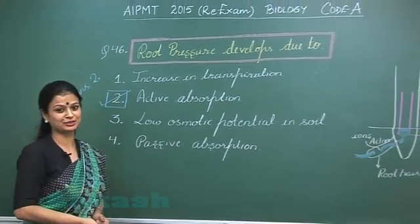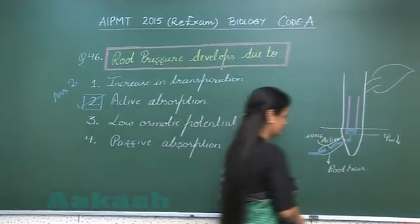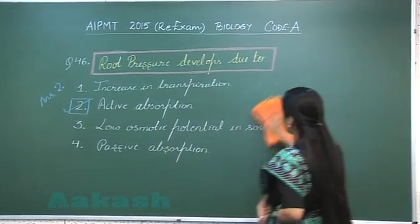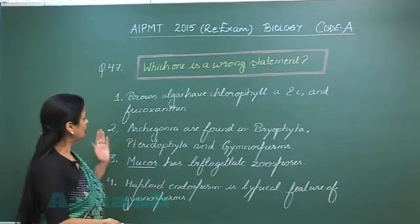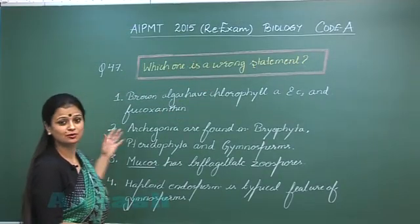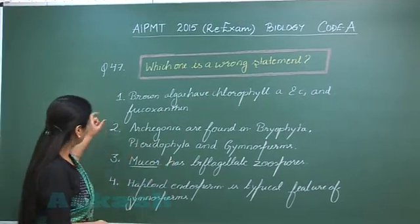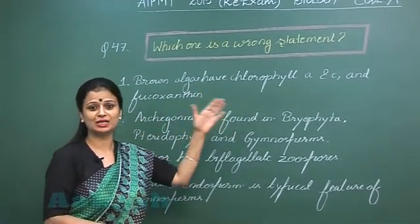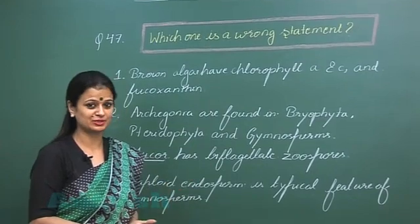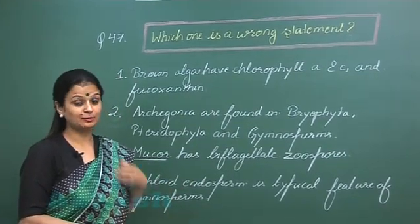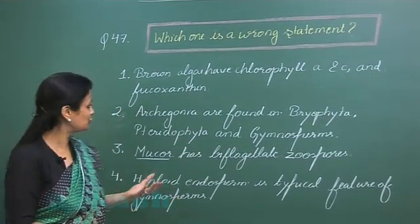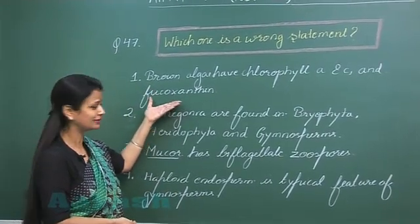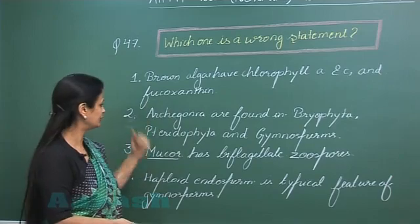Now let's move on to question number 47: Which one is a wrong statement? Looking at the first statement — brown algae have chlorophyll A, C and fucoxanthin. The brown color of the algae is due to the presence of this special type of xanthophyll called fucoxanthin. So this statement is correct.